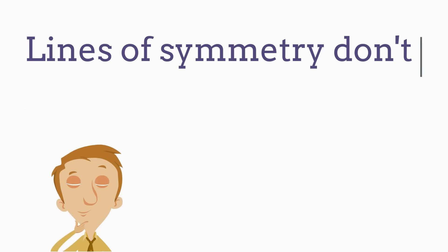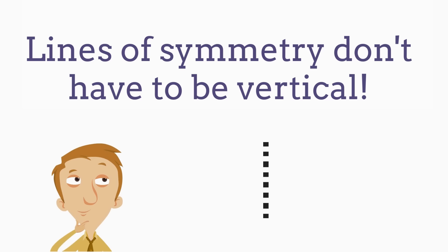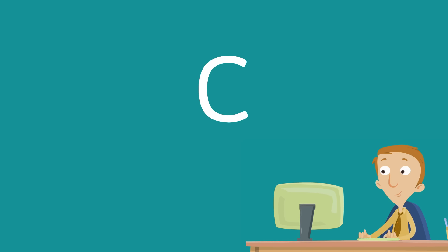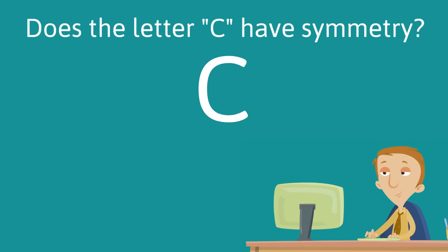Lines of symmetry don't have to be vertical, meaning lines of symmetry don't have to go up and down. Take the letter C, for example. Does the letter C have symmetry? Well, if we try a vertical line of symmetry, it would seem like the answer is no.